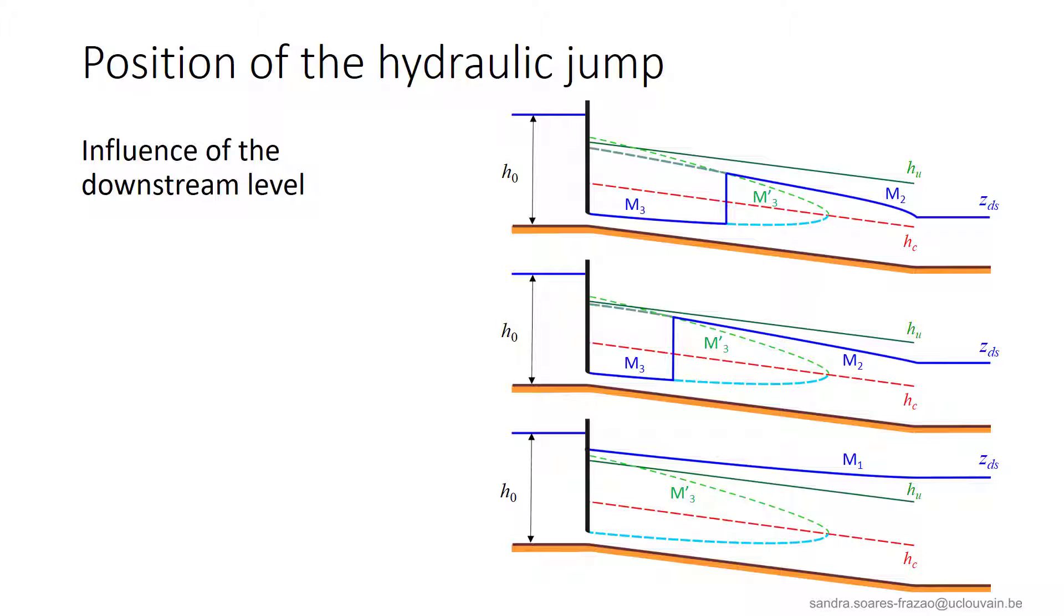For example, here, for this downstream level, we have a M2 profile that crosses the M3 prime curve here. If the downstream level increases, as illustrated in the second situation, the intersection will be shifted in the upstream direction.